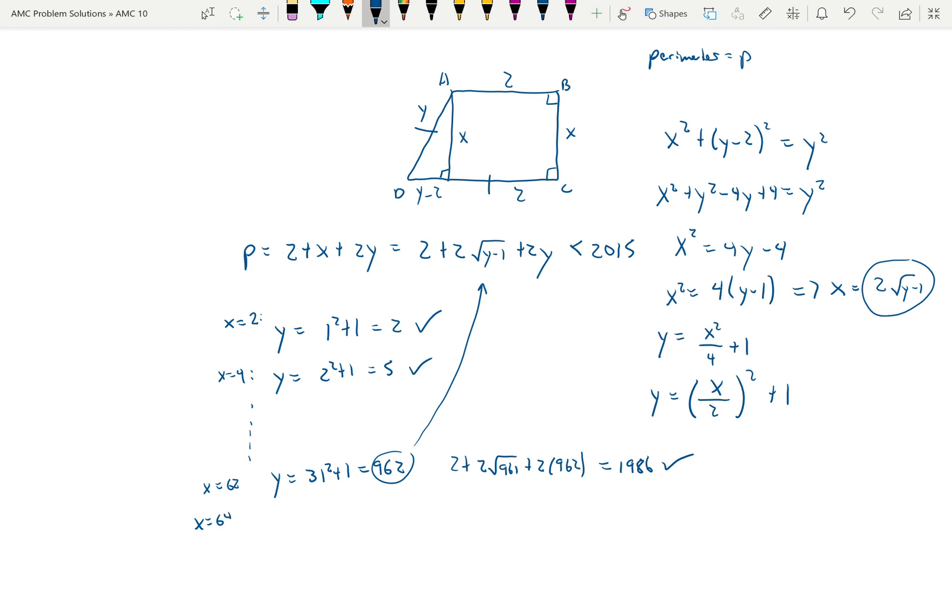Now considering the case where X is equal to 64. So Y is going to be equal to 32 squared plus 1. And so that is 1,025. However, when we plug 1,025 in there for Y, we're going to get 2 plus 64 plus 2 times 1,025. And already this is, that's equal to 2050, which is already bigger than 2015. So that's going to be bigger than 2015. And that's going to be the first time when the perimeter goes over 2015.